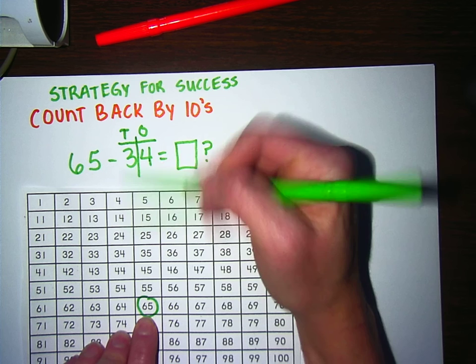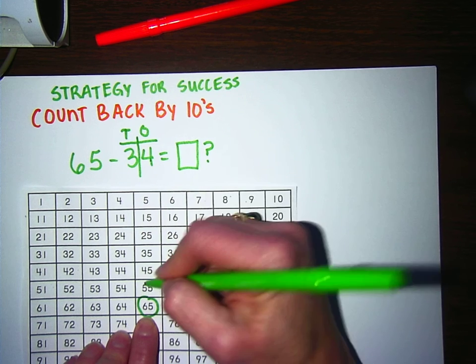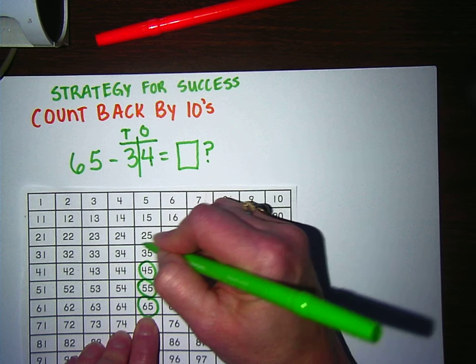Let's take 65. Let's back up our tens first, three tens. So I'll go 65, 55, 45, 35.